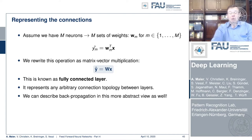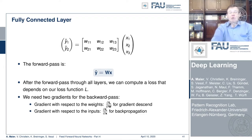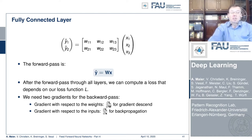We also apply a pointwise non-linearity to get the non-linear effect. The nice thing about the matrix notation is that we can now describe the entire layer derivative using matrix calculus. For a fully connected layer, let's consider three input elements and two neurons — the forward path simply computes y-hat. For the gradients, we need exactly two: the partial derivative with respect to W for weight updates, and the partial derivative with respect to x to pass back in backpropagation.